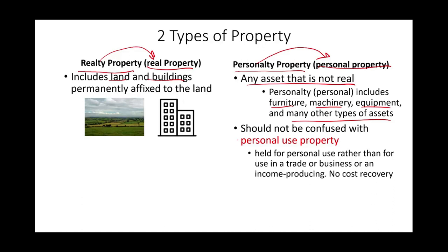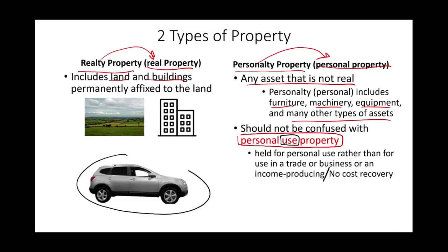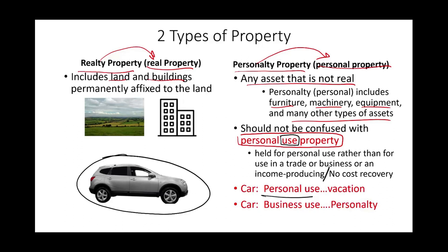Personal property should not be confused with personal use property. Personal use property is held for personal use rather than use in a trade, business, or income-producing activity. For example, a car used for vacations and grocery shopping is personal use property — we don't depreciate it. But that same car used for business purposes is personal property subject to depreciation.